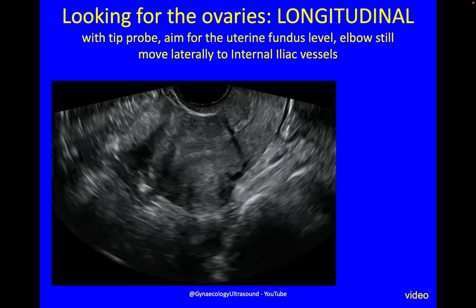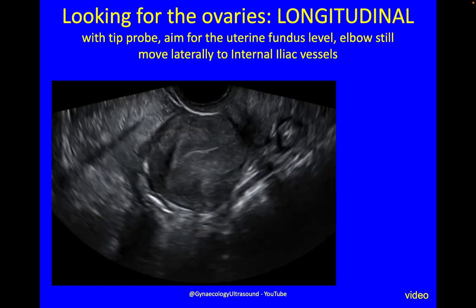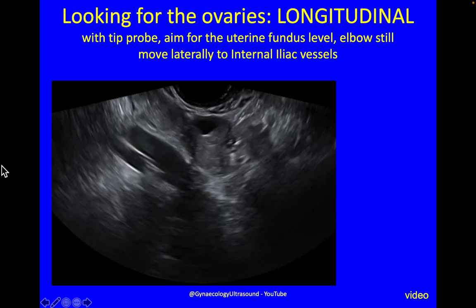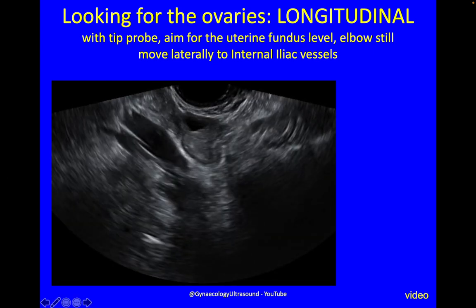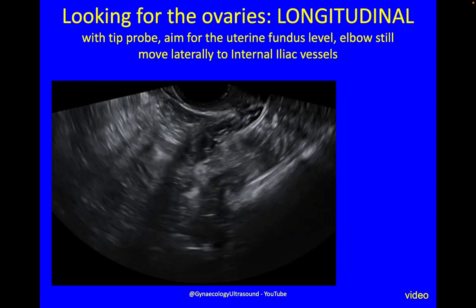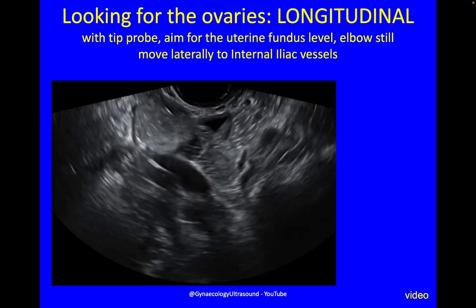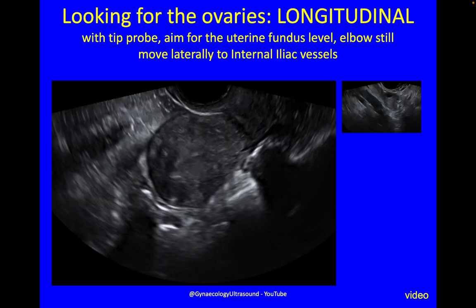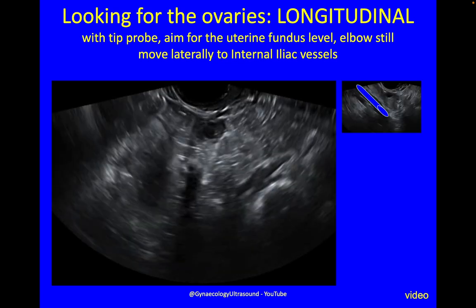How to look for the ovaries — there are two ways: you can find them in the longitudinal plane or the transverse plane. In the longitudinal plane, with the tip of the probe, mentally aim for the uterine fundus as a level, then keep your elbow still and move the probe laterally to the internal iliac vessels. I'll play this video clip: that's the uterus, I'm moving out laterally, there are the internal iliac vessels, and there is the ovary. Level with the uterine fundus, move your probe laterally, aim for the iliacs, and there is your ovary.